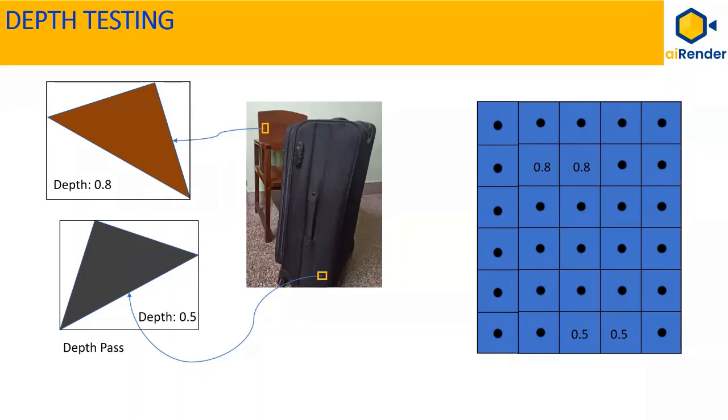So, this triangle also passes depth testing similar to the previous one and the respective locations in depth buffer are marked with its depth value of 0.5.